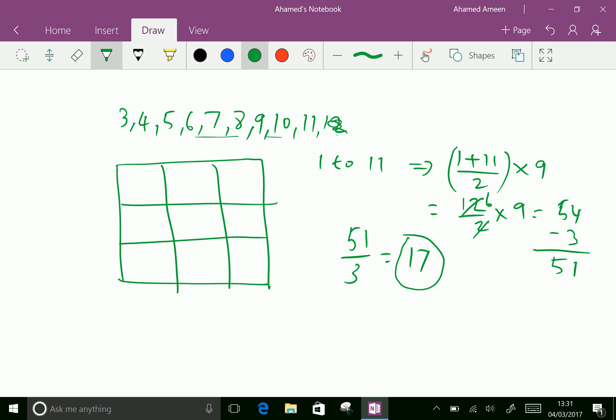So let us fill the numbers now. The middle number is 7. Fill 7 here. Add 7 plus 3, that is 10, put here. Subtract, that is 7 minus 3 is 4, fill it here. 7 plus 1 is 8, fill here. 7 minus 1 is 6, fill here.